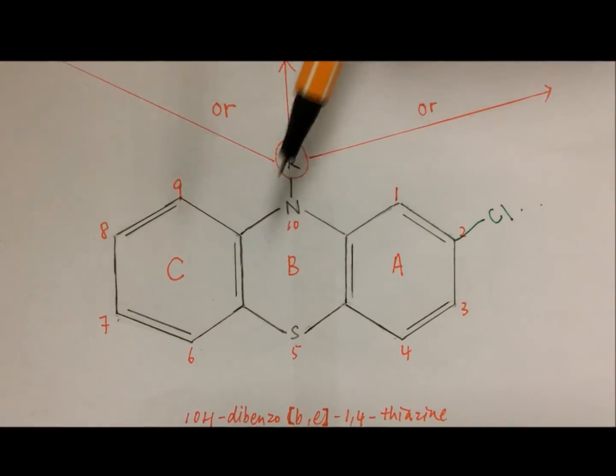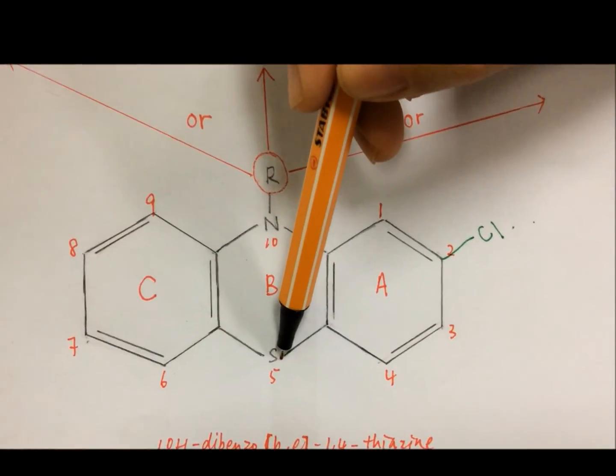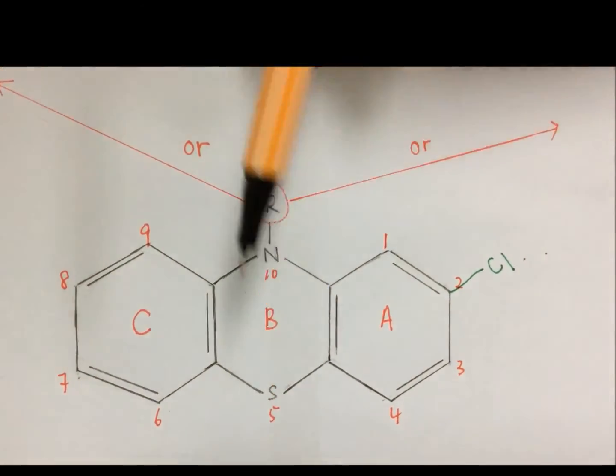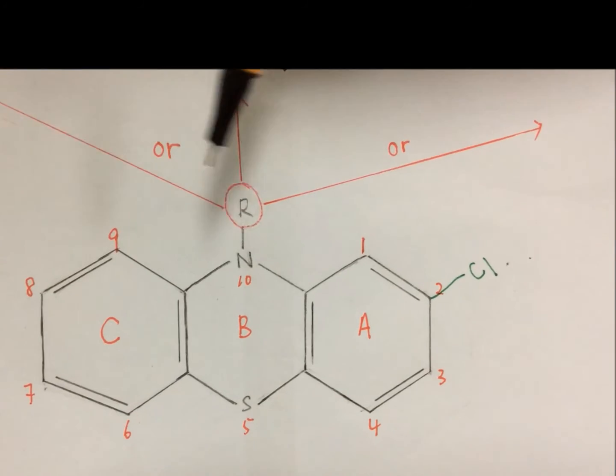Last but not least, oxidation of heteroatom sulfur S at position 5 will cause loss of activity of phenothiazine.